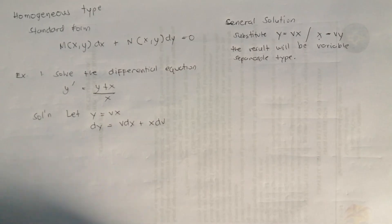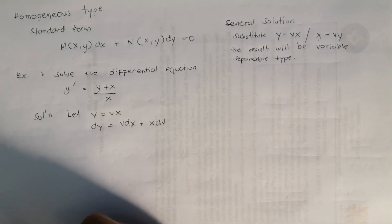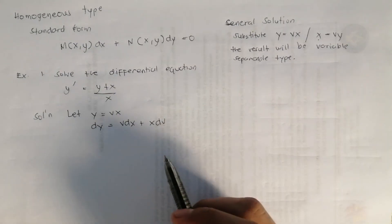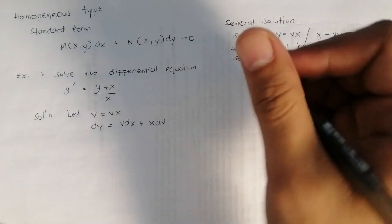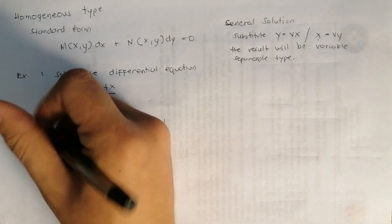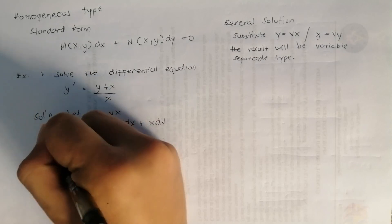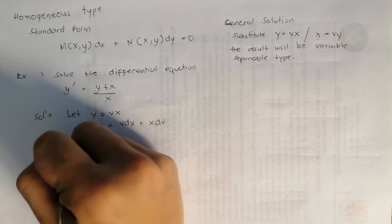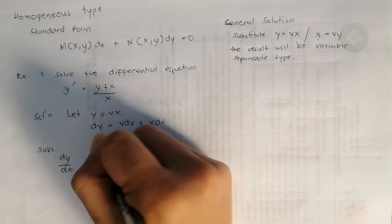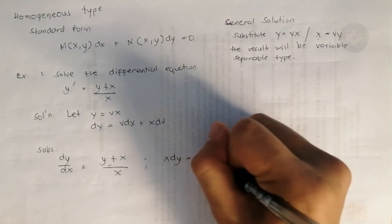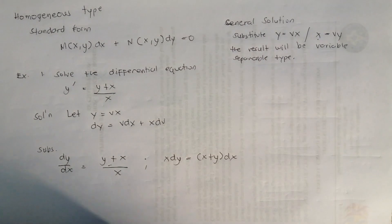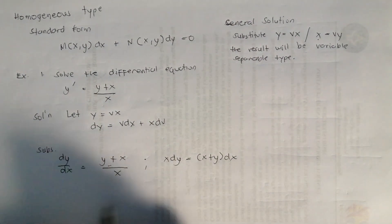When solving the homogeneous type, make sure you write your variables clearly so you won't get confused. Now substitute into the equation. So y prime, which is dy over dx, equals (y plus x) over x. This gives us x dy equals (x plus y) dx.